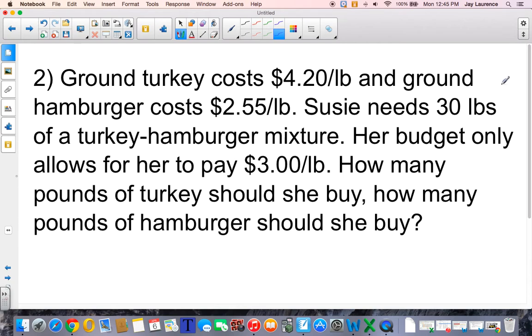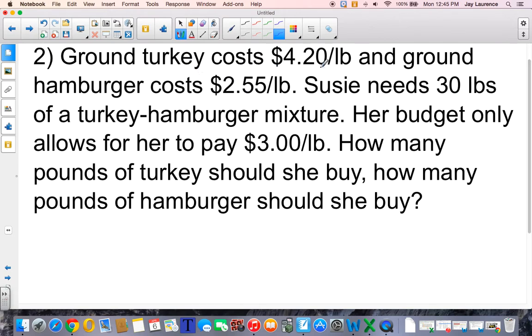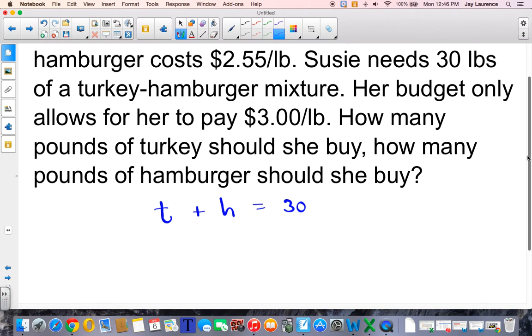Ground turkey costs $4.20 per pound. Ground hamburger costs $2.55 per pound. Susie needs 30 pounds of a turkey hamburger mixture. I'm not going to make a table on this one. I'm going to go right to an equation. I don't want to use X and Y on this one. I want to use H and T. So, turkey plus hamburger needs to equal 30 pounds. The pounds of turkey plus the pounds of hamburger has to equal a total of 30 pounds.